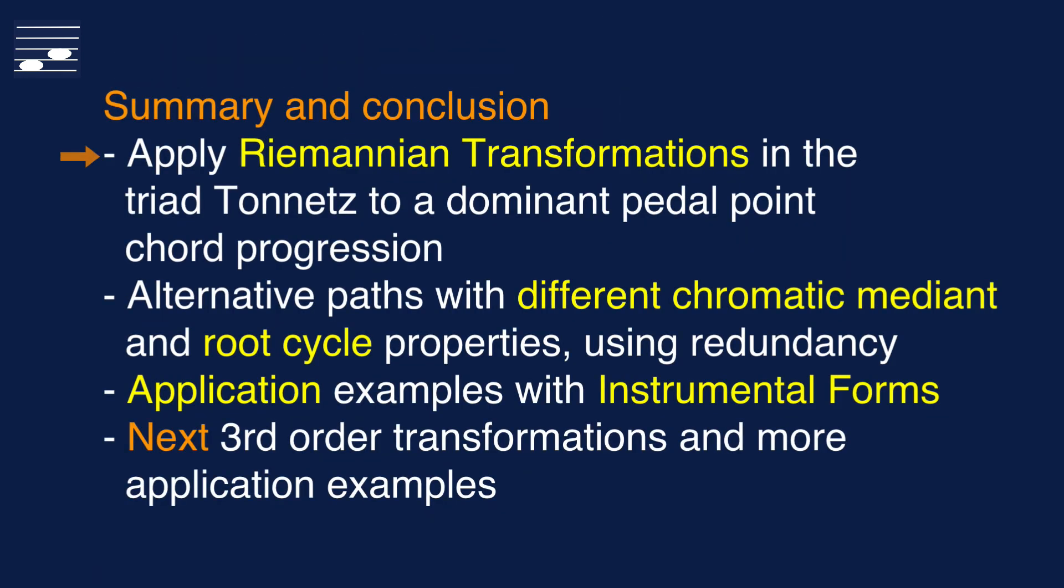In summary, what you've seen in this tutorial is the application of Riemannian transformations in the triad Tornetz to a dominant pedal point chord progression framework. Alternative paths from source to destination triad were demonstrated, using simple and compound transformations with chromatic medians. Some of these alternatives used the redundancy property in the Tornetz, and all were interpreted in terms of Schillinger diatonic and symmetric system root cycles. The five paths were turned into short orchestral compositions using the instrumental form concept.